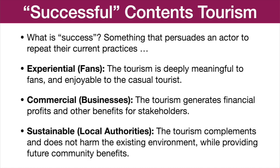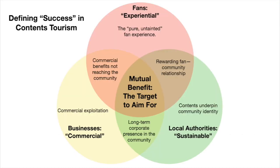For local authorities, the key word is sustainability. The tourism induced by works of popular culture should not harm the local environment or make a community an unpleasant place to live. In the ideal, in addition to clear financial and other benefits, the community should feel a strong attachment towards the contents. If we put all of these ideas together, we can create the diagram on the slide. The circles represent success for each individual actor, with the ideal target in the middle where all three actors feel they are gaining something positive from contents tourism. One of the key conclusions of our research is that when the actors create a positive, collaborative relationship, the benefits of contents tourism are maximised.